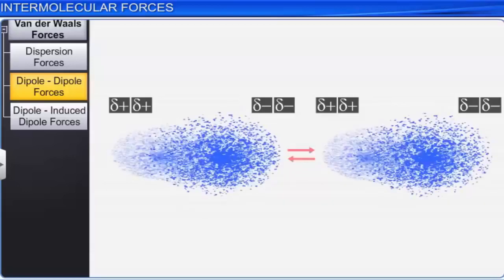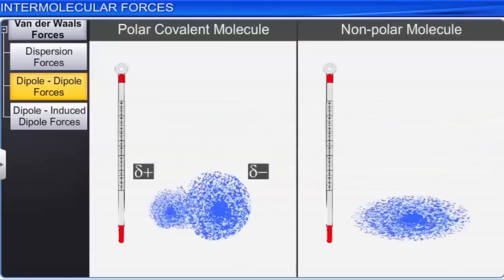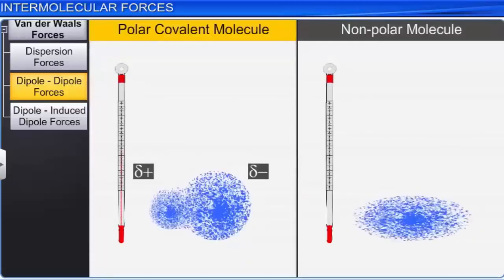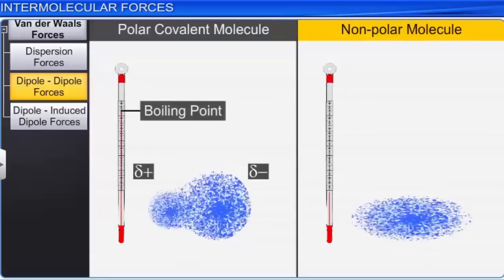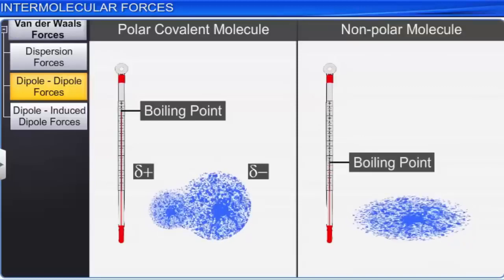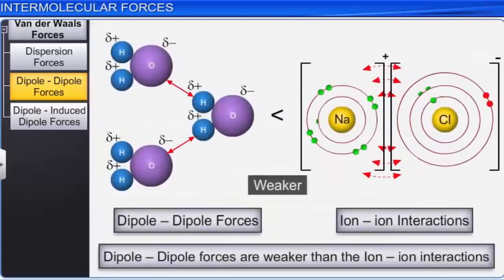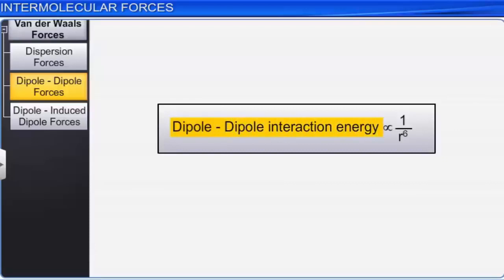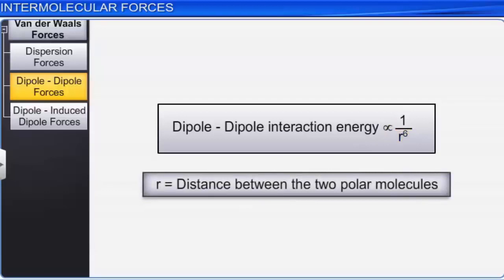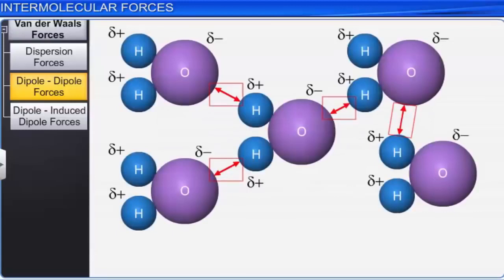Due to this, the boiling point of polar covalent compounds is relatively higher than that of non-polar covalent compounds. The dipole-dipole forces are stronger compared to London forces, but due to the involvement of only partial charges, they are weaker than ion-ion interactions. The dipole-dipole interaction energy between polar molecules is inversely proportional to the sixth power of the distance between the two polar molecules. Polar molecules can interact both by dipole-dipole forces and also by London forces of attraction.